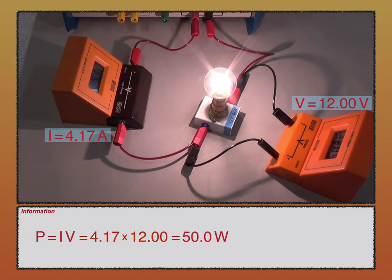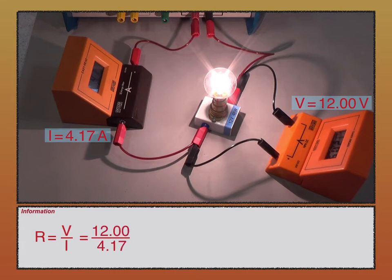The last two equations for electrical power require us to calculate the resistance of the lamp. This can be done using Ohm's law: V is equal to IR. If we divide both sides by current I, we get resistance R equals voltage V divided by current I. Substituting into this equation, we get a resistance of 12 divided by 4.17, which equals 2.88 ohms.